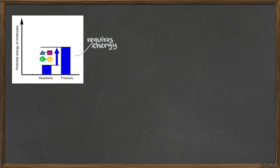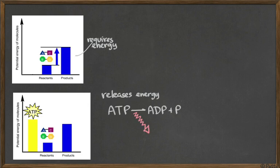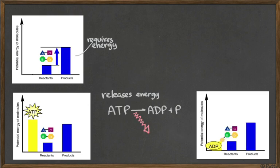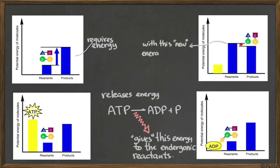You have a reaction that requires energy, and you can use ATP. I have ATP on the left with lots of energy - I release the energy from ATP, making it ADP plus P, and that energy goes to the reactant. The reactant now has a phosphate, and with the phosphate it is full of energy. Now it becomes more energetic than the product itself, so it just goes downhill and makes the chemical reaction happen.